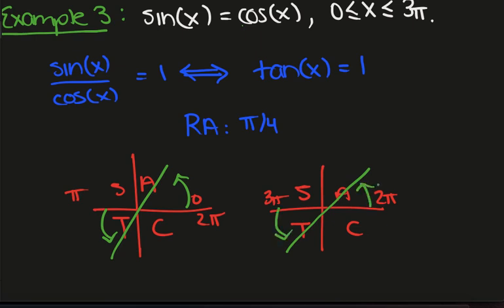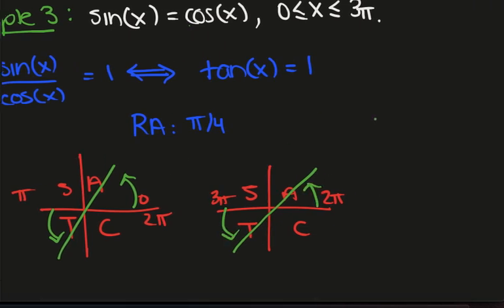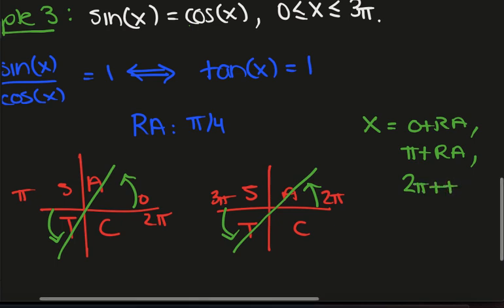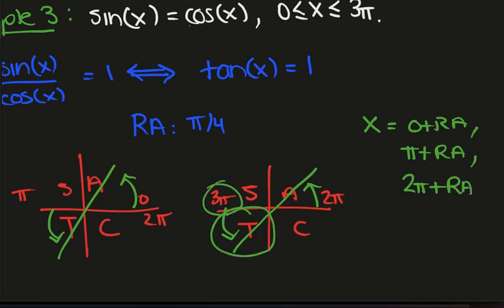So we approach again from the horizontals. And so x is 0 plus the reference angle, pi plus the reference angle, 2 pi plus the reference angle.